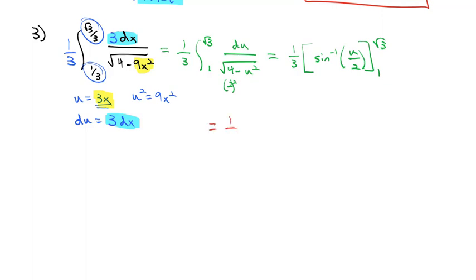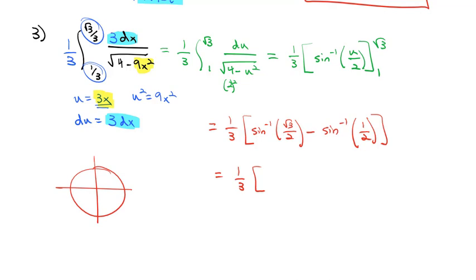So we end up with 1/3 times the sine inverse of root 3 over 2 minus the sine inverse of 1 over 2. So we have 1/3 times, remember our unit circle, sine is the y-coordinate, that's root 3 over 2 at pi over 3, minus sine of the y-coordinate is 1 half at pi over 6.